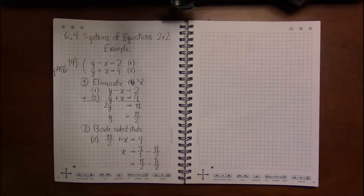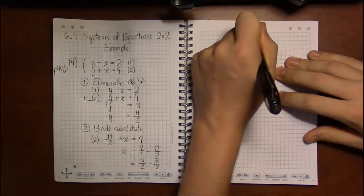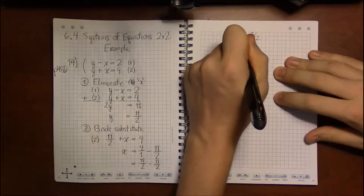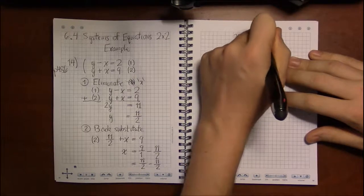So 18 over 2 minus 11 over 2, and we have that x is 7 over 2 and y is 11 over 2 as we saw earlier.